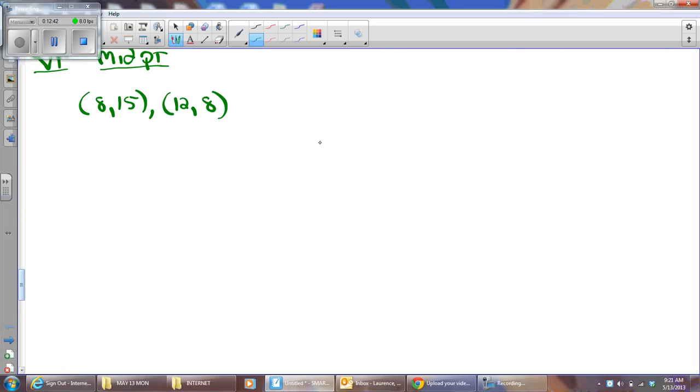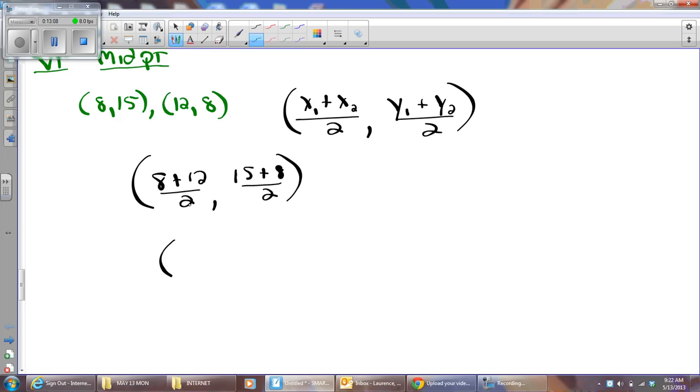Midpoint formula. Remember, to do the midpoint, you just average the x's and you average the y's. If I add the x's together, I'm going to get 8 plus 12 divided by 2. And I add the y's together, I'm going to get 15 plus 8 divided by 2. My x is going to be 10, and then I'm going to get 23 over 2. Half of 23 will be 11.5. And that's the midpoint of the segment that goes from those two points. This is the midpoint of segment AB.